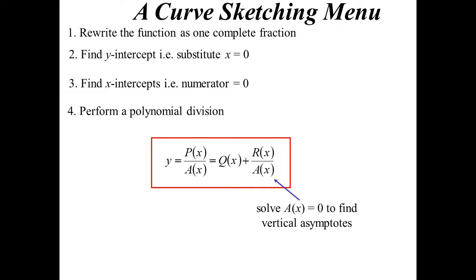So the divisor, A(x), well we know the bottom of the fraction can't equal 0, so that tells us vertical asymptotes, point discontinuities, that sort of thing.